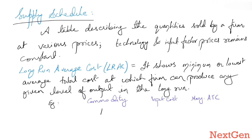Suppose the firm produces two commodities, A and B. The input price to produce commodity A is 5 rupees and commodity B is 8 rupees. Therefore the marginal average total cost for producing both commodities will be (5 + 8) / 2, which equals 6.5 rupees.